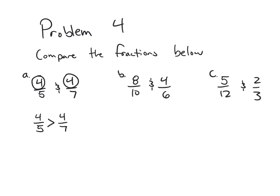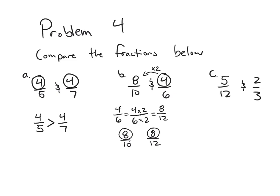In Problem 4B, comparing eight-tenths and four-sixths, if I multiply the numerator of four-sixths by two, I get eight — the same number of units. Multiplying both numerator and denominator by two gives the equivalent fraction eight-twelfths. Now comparing eight-tenths and eight-twelfths with the same number of units, tenths are larger than twelfths, so eight-tenths is greater than eight-twelfths — therefore eight-tenths is greater than four-sixths.